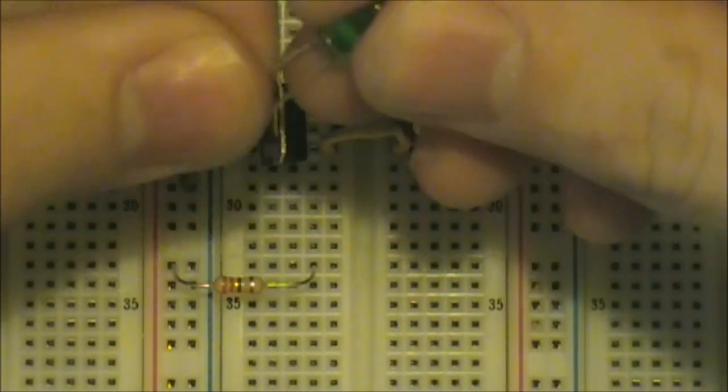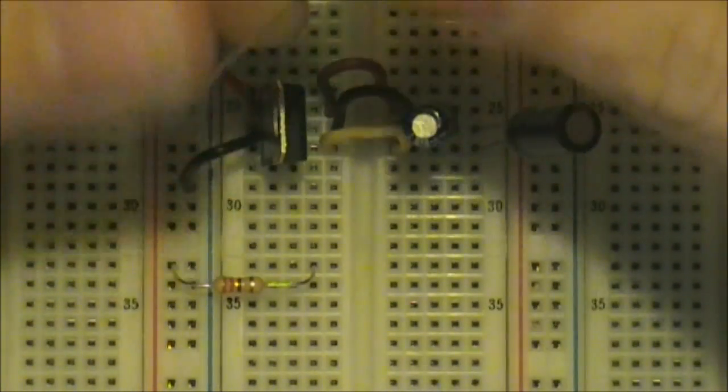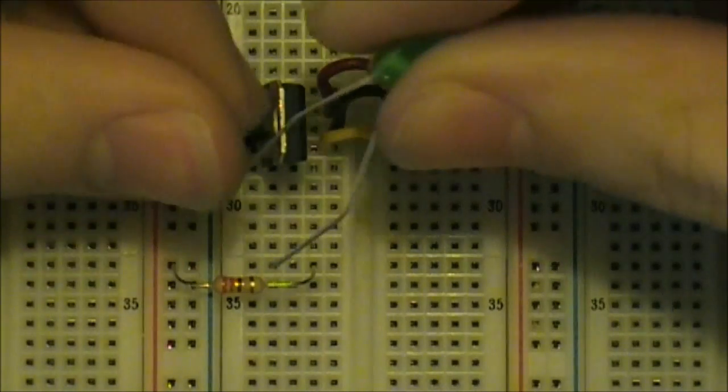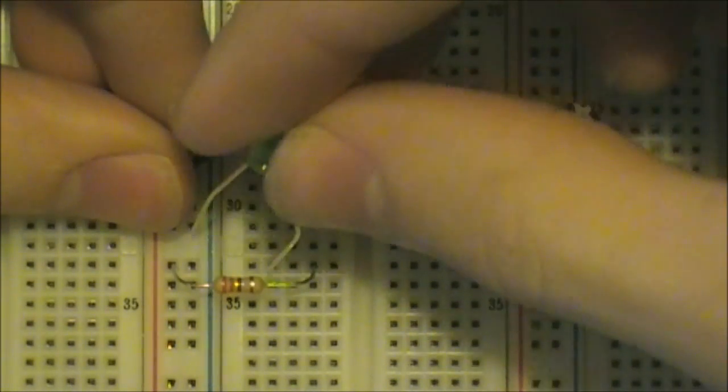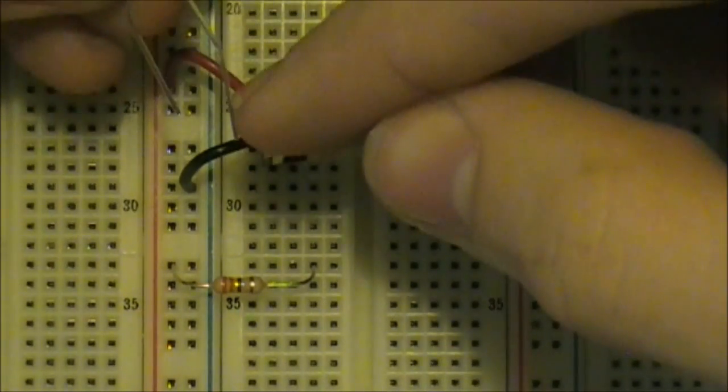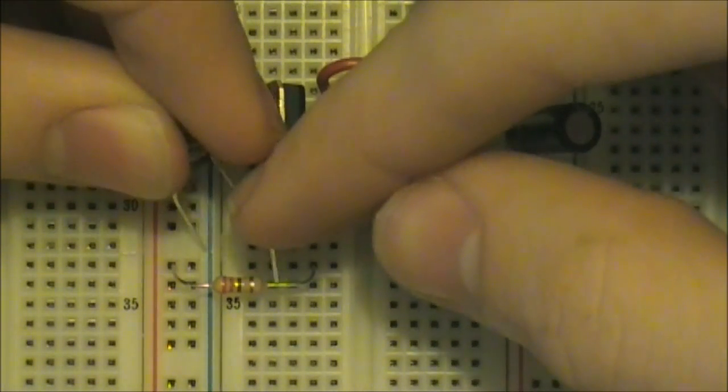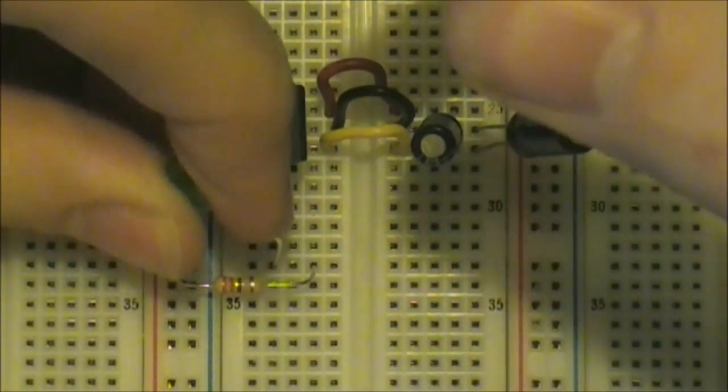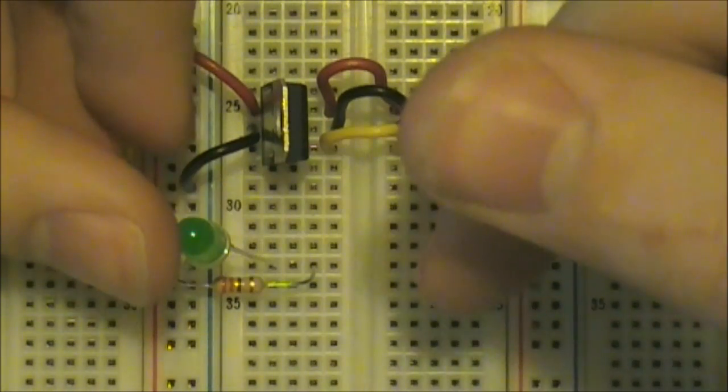So I'm going to bend this a little bit. And then we are going to insert it. Longer lead goes next to the resistor. Shorter lead goes to the negative, or the ground power bus.